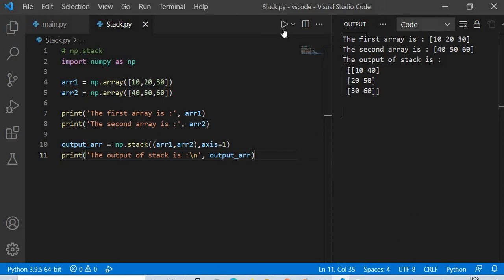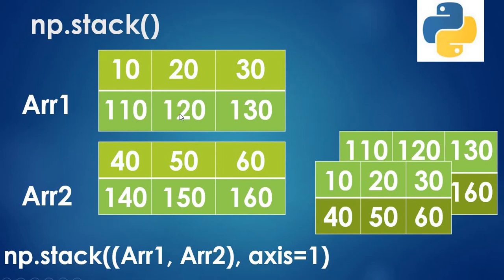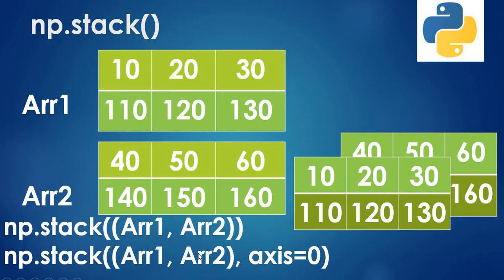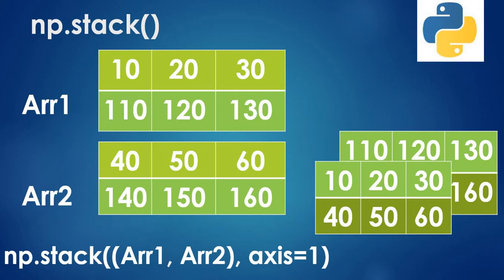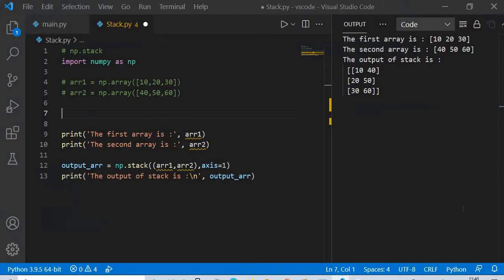Now what happens if we move to a multi-dimensional array? Array one is [[10, 20, 30], [110, 120, 130]] and array two is [[40, 50, 60], [140, 150, 160]]. With axis=0, the entire first array is stacked on top of the second array. Whether you provide axis=0 or omit it, the result is the same. With axis=1, the first row of array one and the first row of array two form one matrix, and the second rows form another matrix.